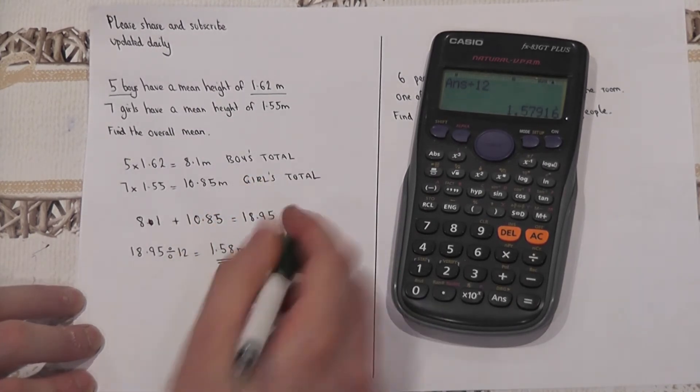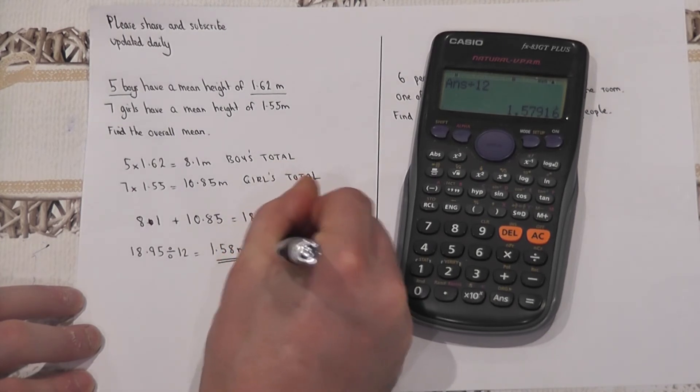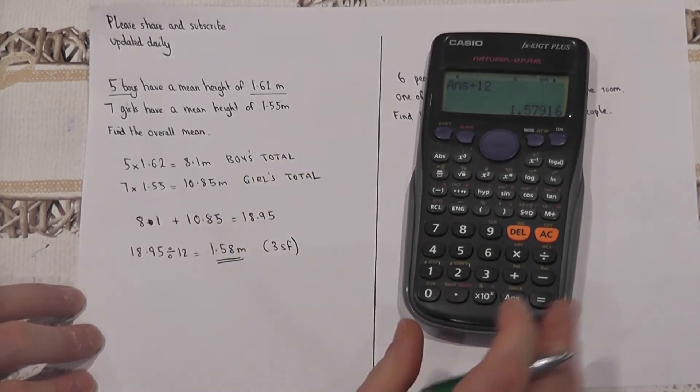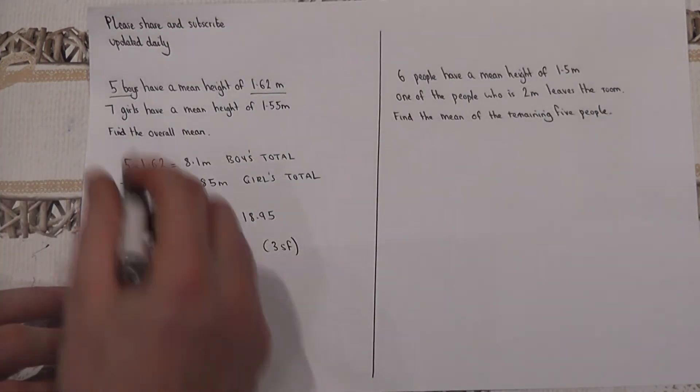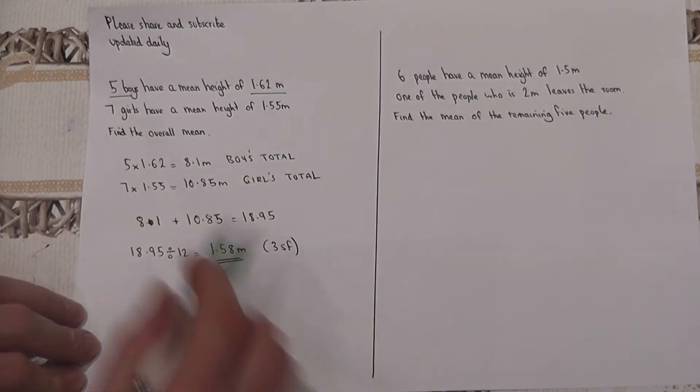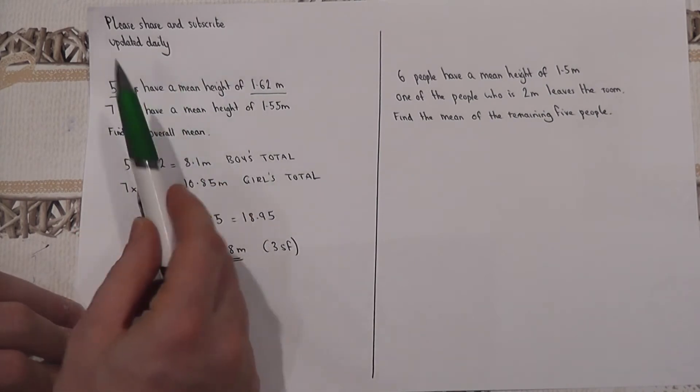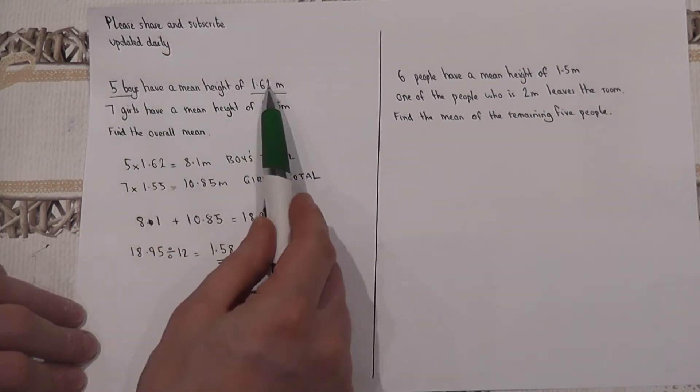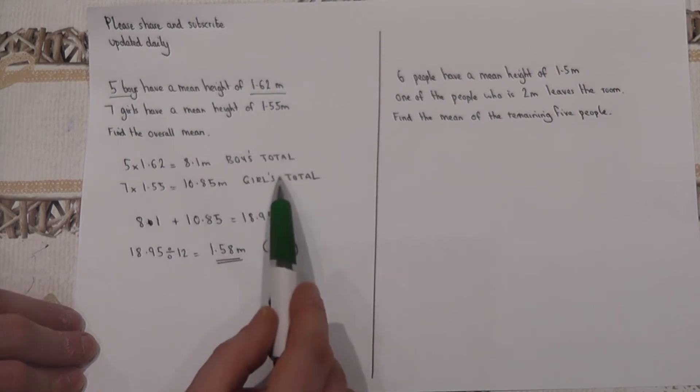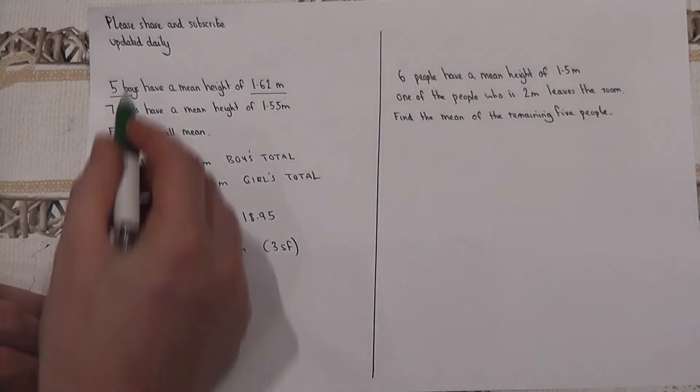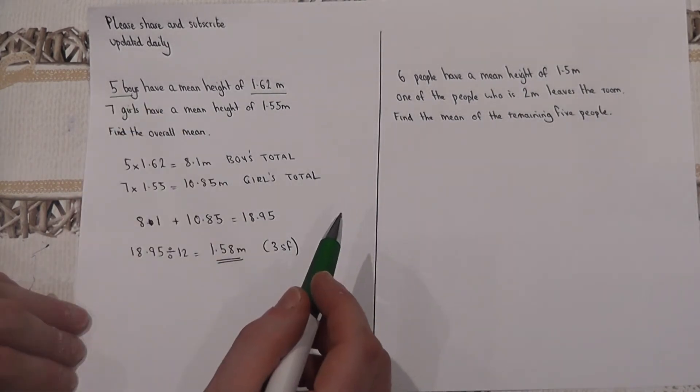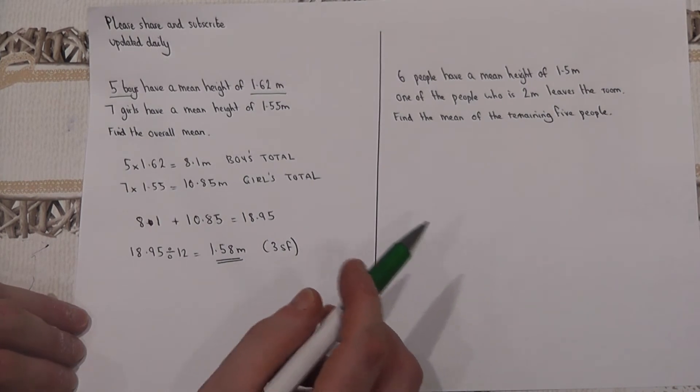So the golden rule for these combining the mean questions is to multiply the number of people by the mean to get the totals and to work with the totals rather than the individual means. And in the end I divided by 12 because there were 12 people in total.